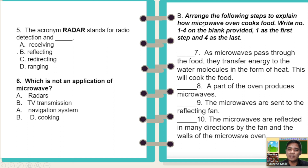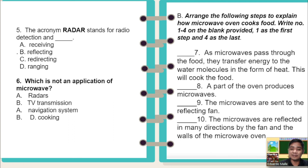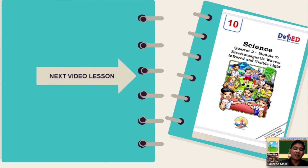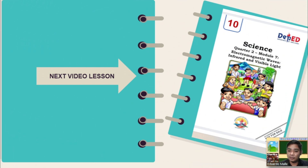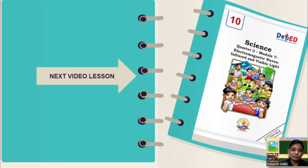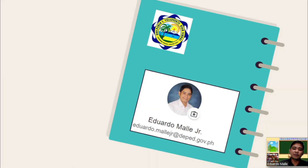Arrange the following steps to explain how a microwave oven cooks food — write numbers 1 to 4 on the blank provided, with 1 as the first step and 4 as the last. I hope you enjoyed studying this lesson. Our next video lesson will be Module 7 of Quarter 2, tackling the applications of infrared and visible light. Again, this is Sir Eduardo D. Malie Jr. Thank you for watching and I hope you learned a lot from this video.